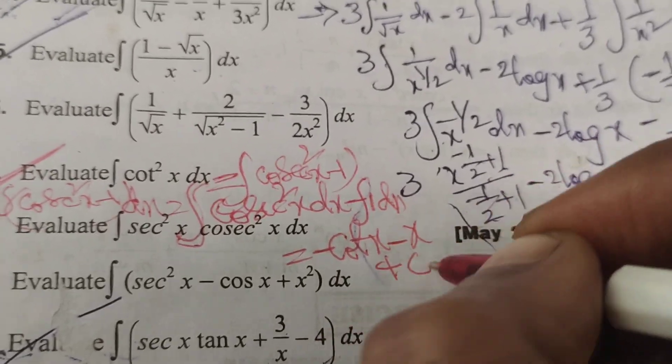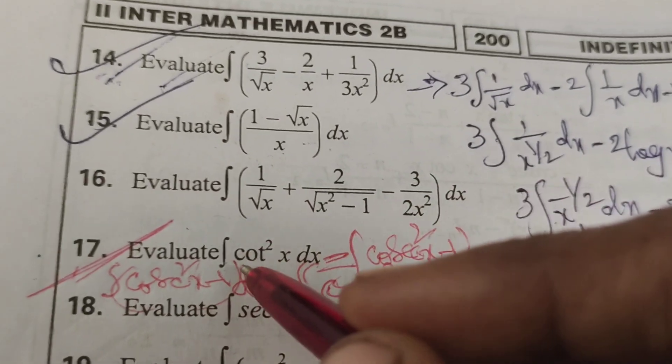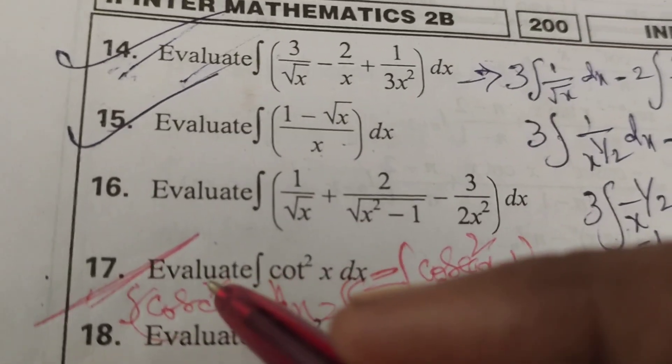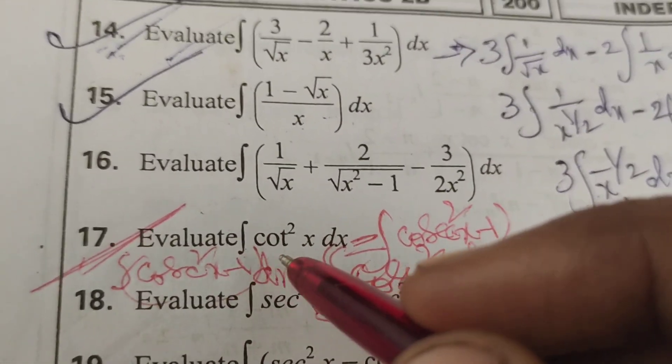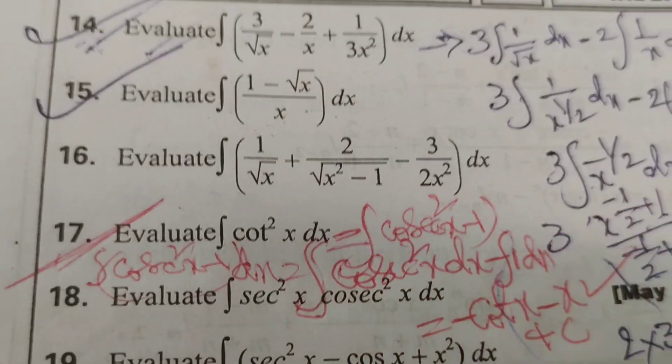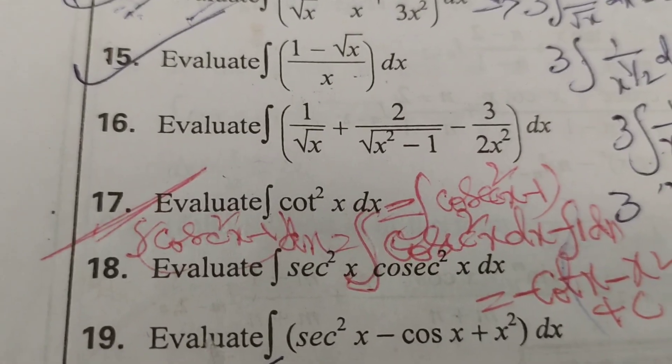This is the solution to the evaluated integral problem: the integral of cot square x dx equals minus cot x minus x. Thank you.